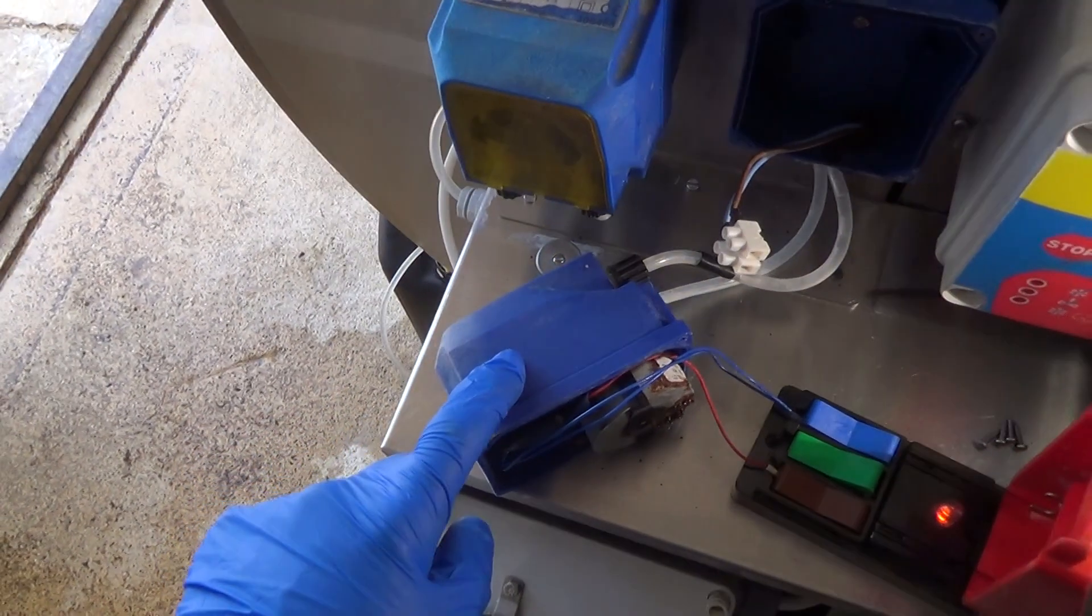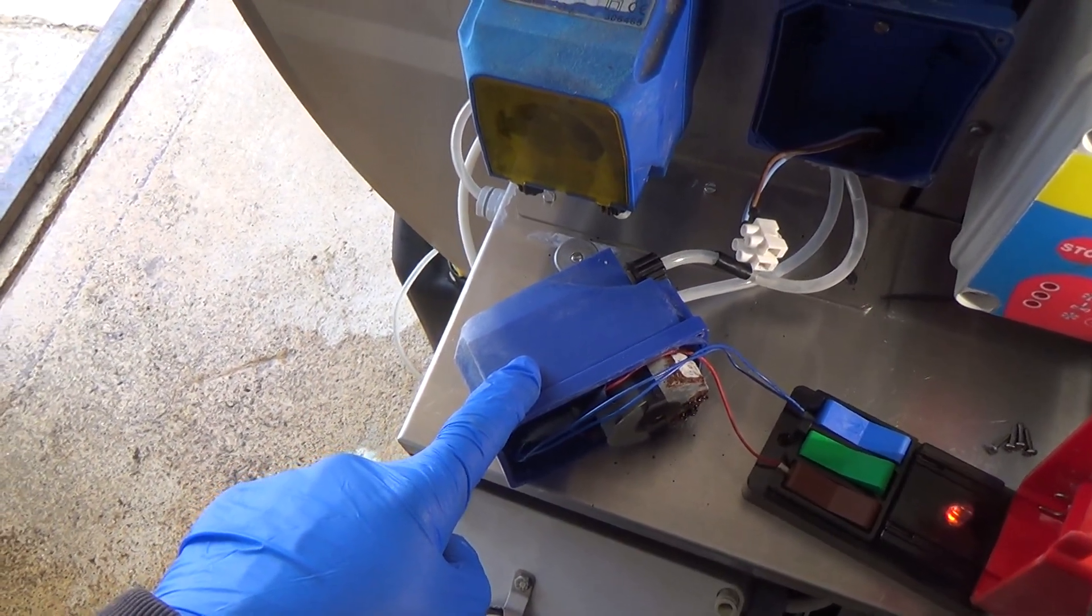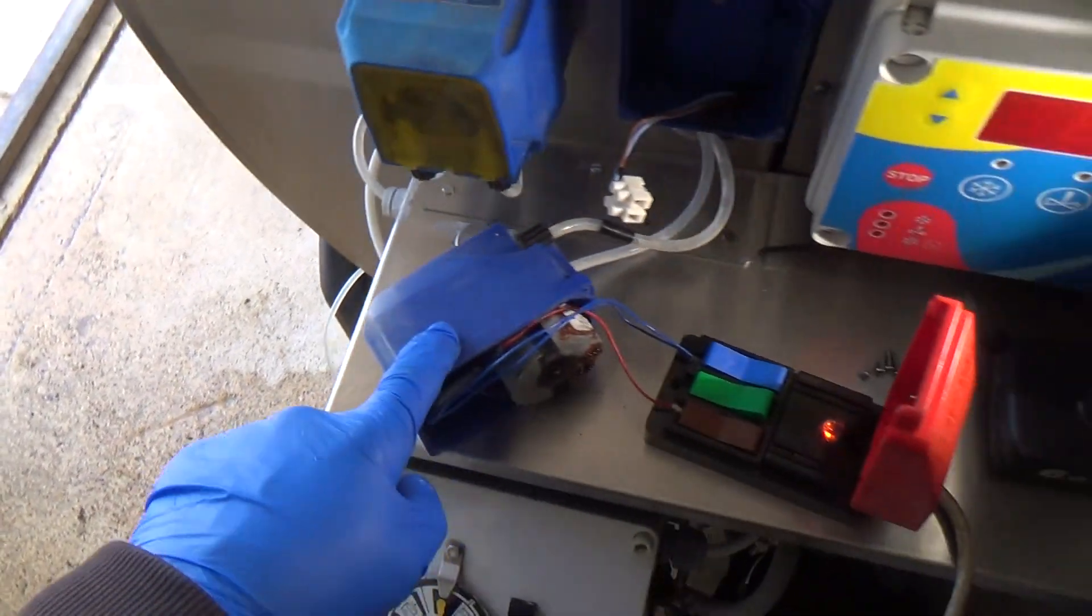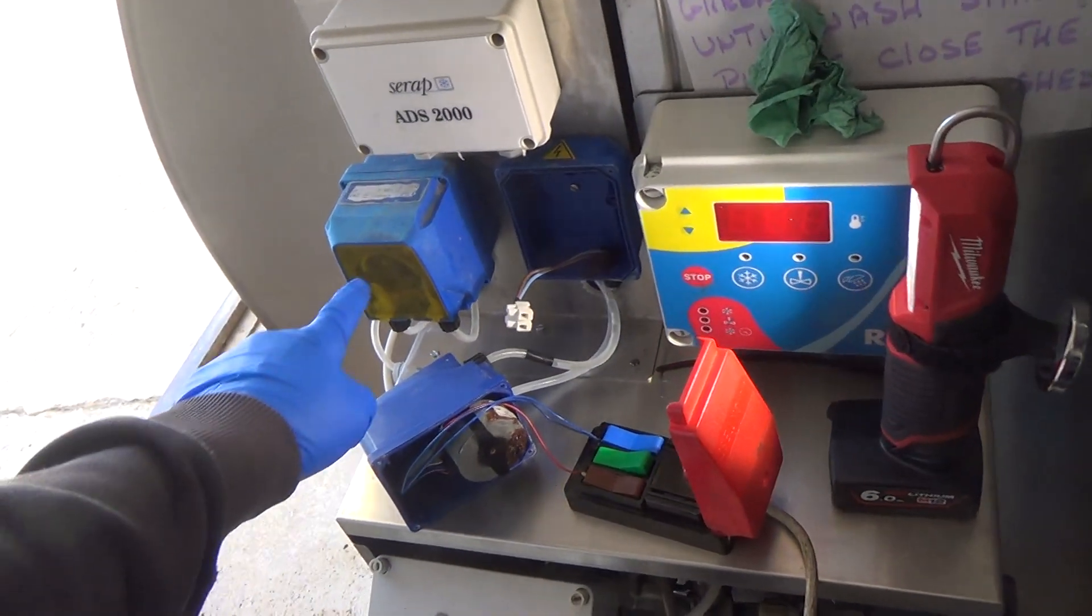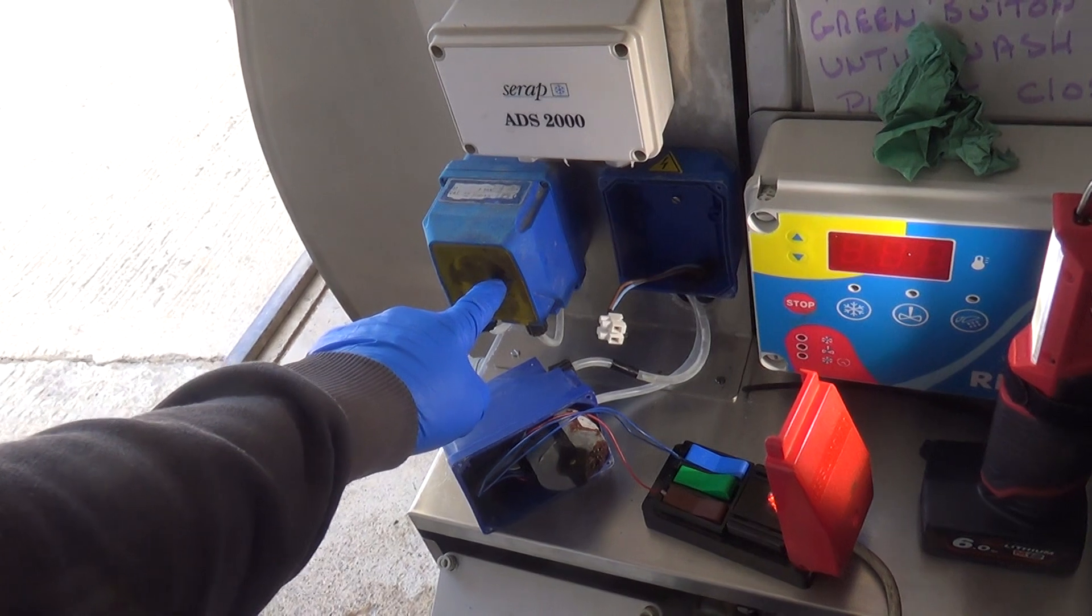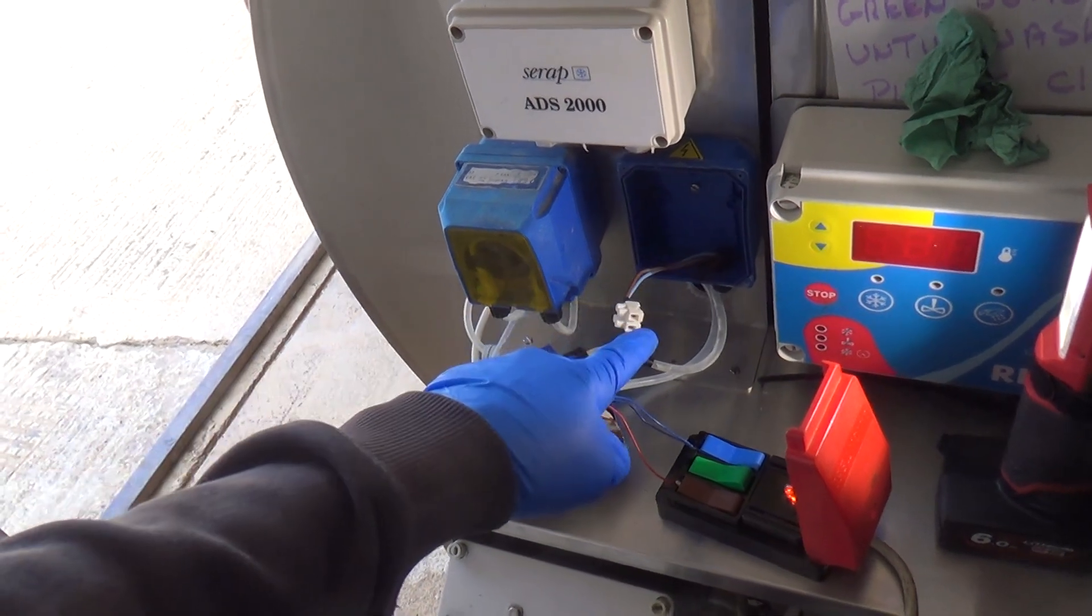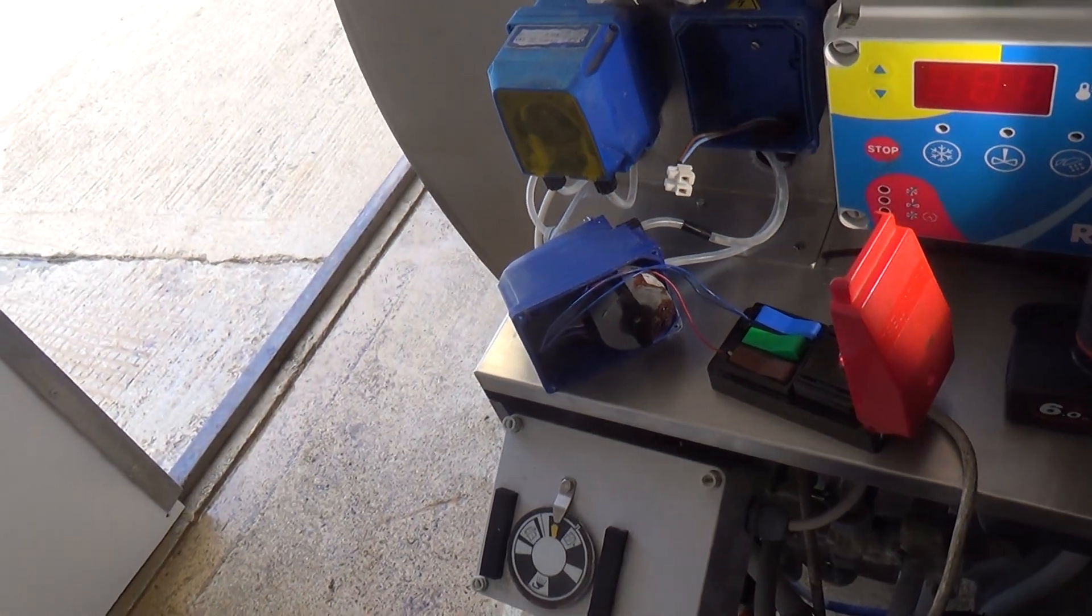This one, where it does the hypochlorite final rinse or rinse before, I think it's the final rinse, is a mains pump. So you need to be very careful that they look the same, but you need to check that you're not putting a 24 volt pump on a 240 volt feed, because it will blow up. And I have seen that done.